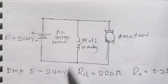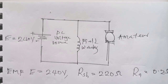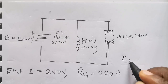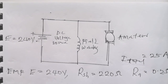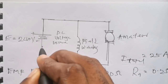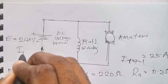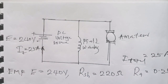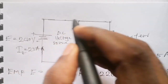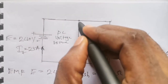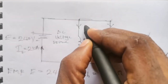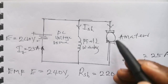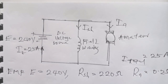We are given the total current IT equal to 25 amps, which is the current flowing through the source. When this current flows through the circuit and gets to the node, some of it branches into the field winding and some branches into the armature. The current going into the field winding is called the shunt field current Ish, whereas the current going into the armature is called the armature current Ia.